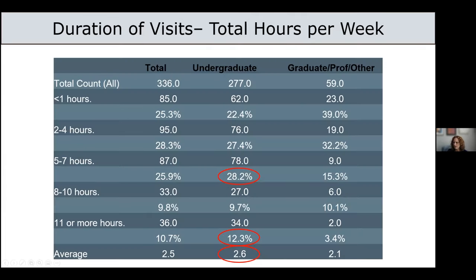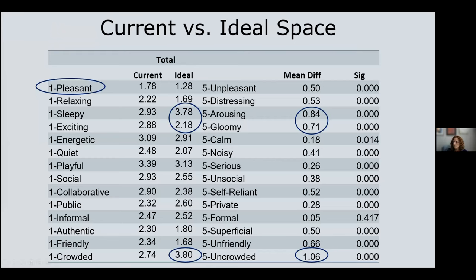We also looked at the duration of visits and total hours per week students spent in the space. What stood out was that undergraduates were actually spending more time in the space than graduate students. Is it because undergraduates don't have their own offices? Some grad students have office space if they're research assistants, but we were surprised to see how much undergraduate students reported spending in the library.